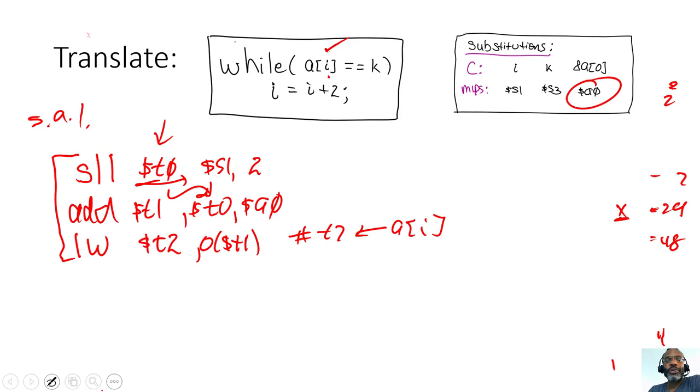So inside of T2 now, inside of T2, register T2, is A sub i. So I have the value. Now that I have it, I want to do a comparison with A sub i and k. And if A sub i is not equal to k, so I'll try a branch if not equal. If A sub i, which is inside of T2, if A is not equal to k, which is inside of register S3, if they're not equal, then I want to exit the while loop.